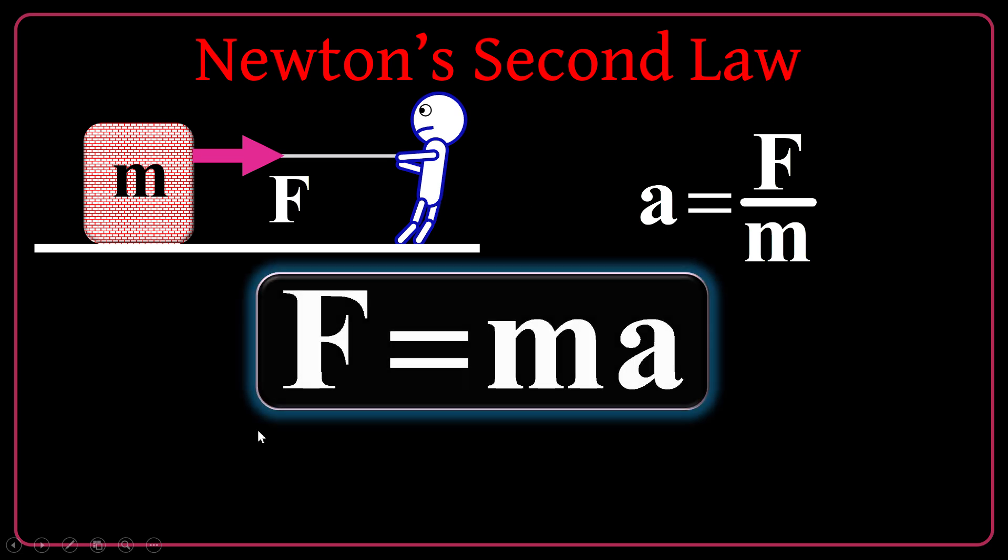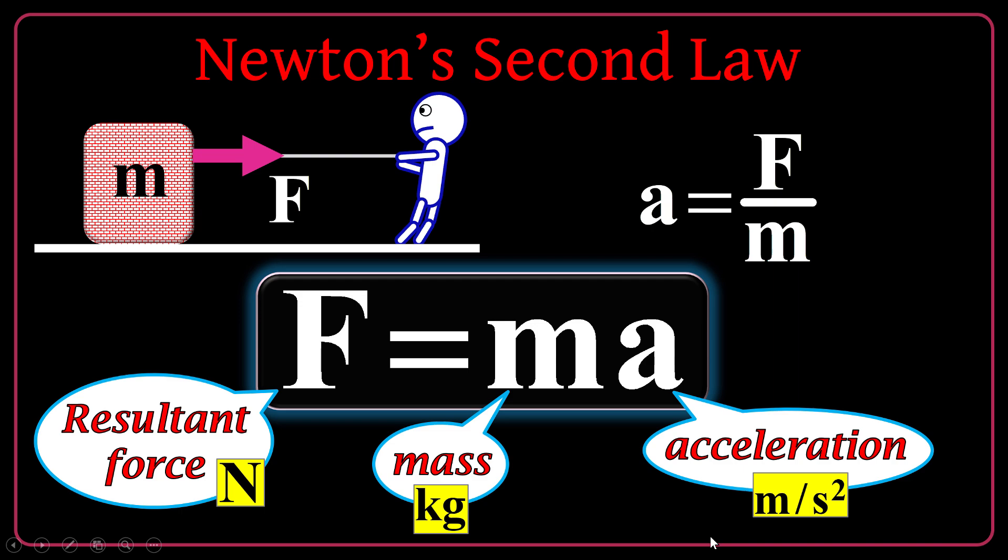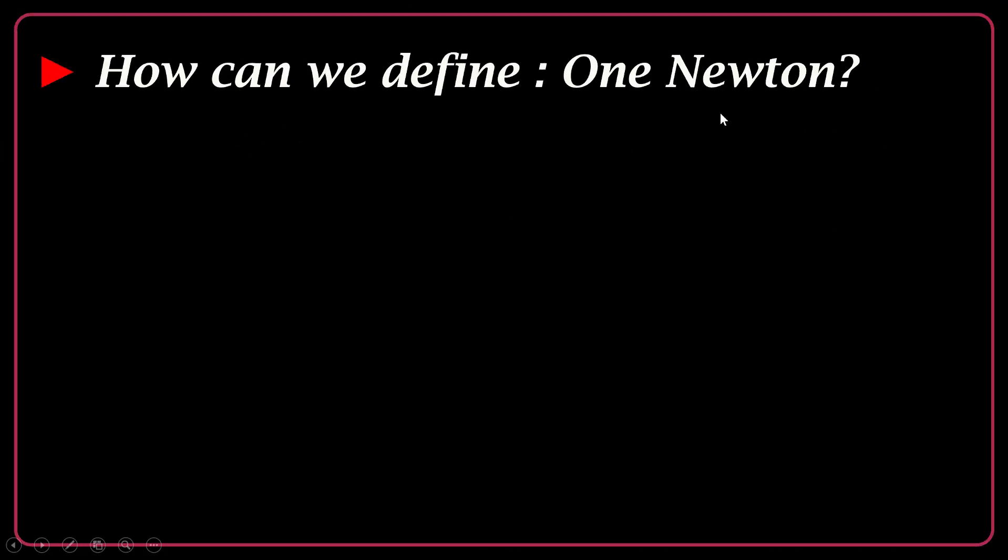If I rearrange the equation by a cross product, I will get F equals MA. So the net force acting on the object will be the product of the mass and the acceleration. Force is the resultant force here measured in newtons in SI units, mass in kilogram in SI units, and also the acceleration in meter per second square.